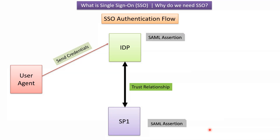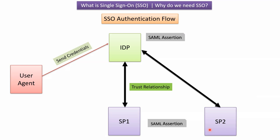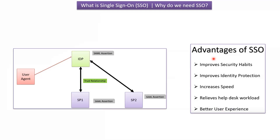If the user wants to access a second service provider, the trust relationship between the IdP and Service Provider 2 must also be established when configuring SSO or SAML federation. Since the user is already authenticated with the IdP, the IdP sends the SAML assertion to Service Provider 2. Seeing the SAML assertion, Service Provider 2 knows the user is valid and allows access. So the user has logged in only one time but can access multiple services — this is called SSO.